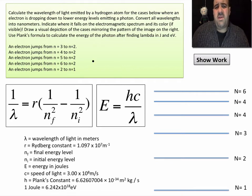Let's read the question and see what we have to do. Calculate the wavelength of light emitted by a hydrogen atom for the cases below. These are the cases where an electron is dropping down to a lower energy level and emitting a photon. Convert all wavelengths into nanometers.